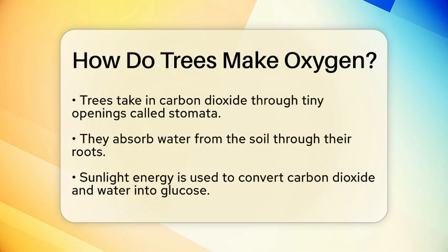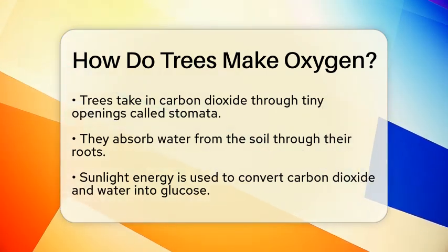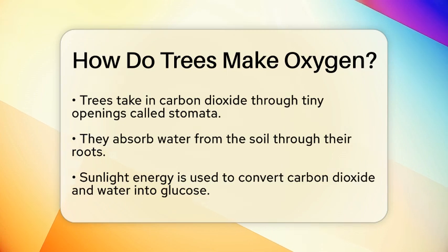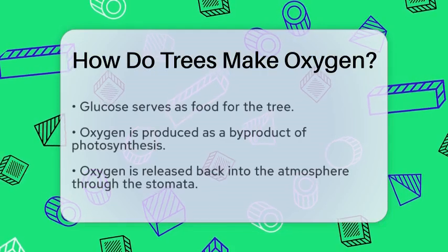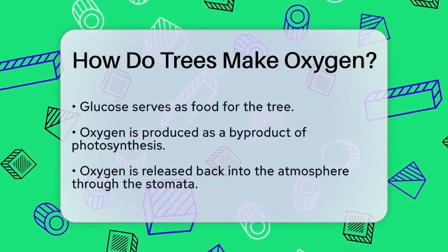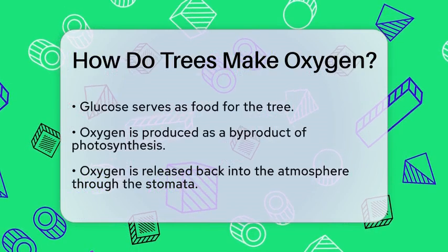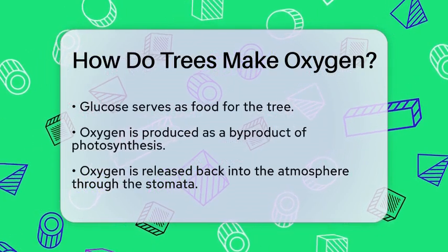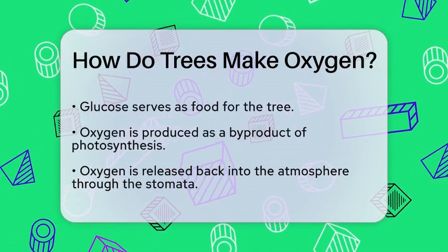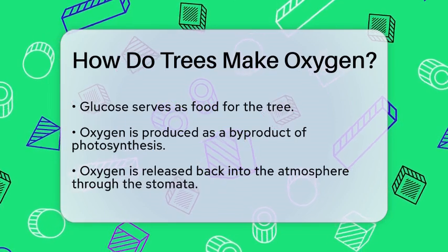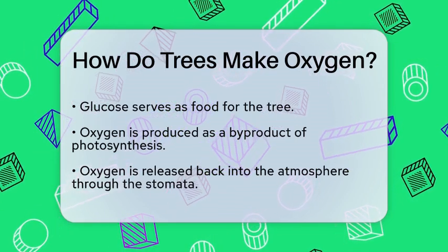During photosynthesis, trees take in carbon dioxide from the air through tiny openings in their leaves called stomata. At the same time, they absorb water from the soil through their roots. Using the energy from sunlight, trees convert carbon dioxide and water into glucose, a type of sugar that serves as food for the tree. As a byproduct of this chemical reaction, oxygen is produced.